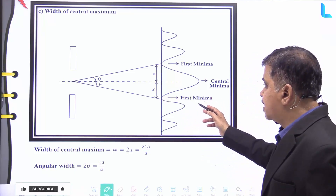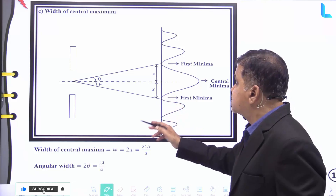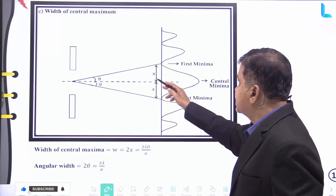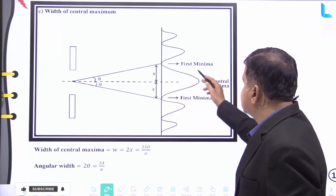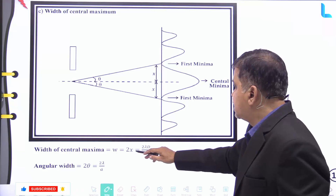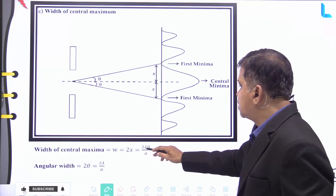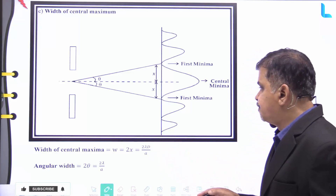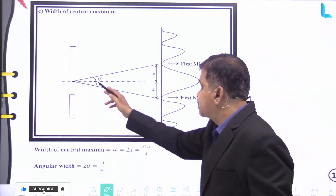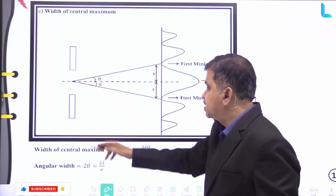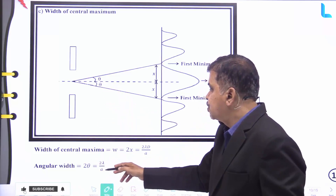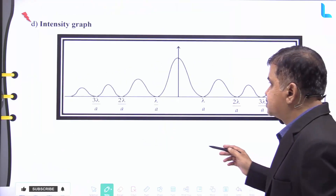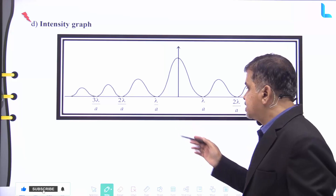The width of the central maxima, as seen in the figure, is W = 2x = 2λD/a. The angular width 2θ = 2λ/a. The intensity graph of the wave is also shown in the figure.